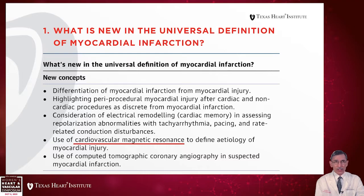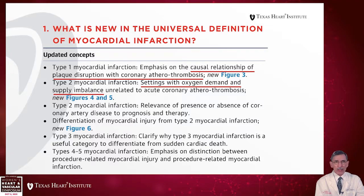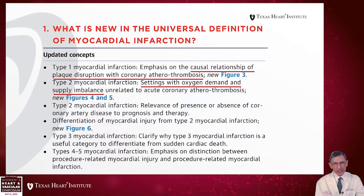What's new in this universal definition? Large parts are reinforced from the previous third universal definition, but among the things pointed out is the use of cardiovascular magnetic resonance imaging to define etiology. Updated concepts include the refinement of Type 1 and Type 2 definitions — we won't address Type 3, 4, or 5 today. Type 1 is myocardial infarction with emphasis on the causal relationship of plaque disruption in the coronary atherothrombosis model. Type 2 includes settings with oxygen demand and supply imbalance unrelated to acute coronary atherothrombosis. I have some general disagreements with the approach taken in these definitions, which I'll refer to shortly.